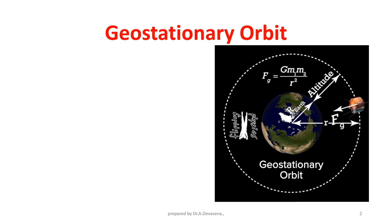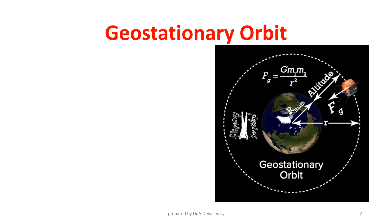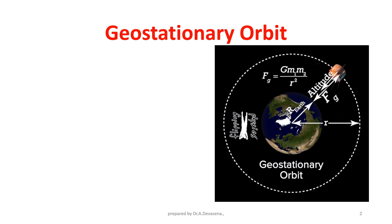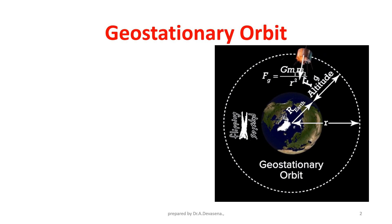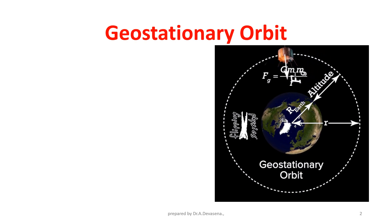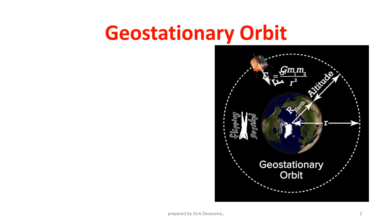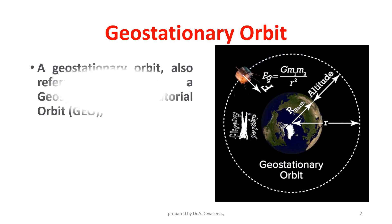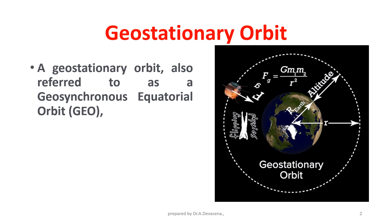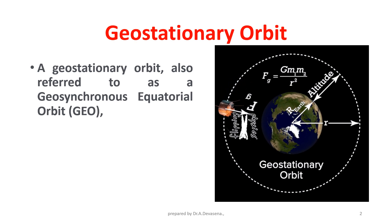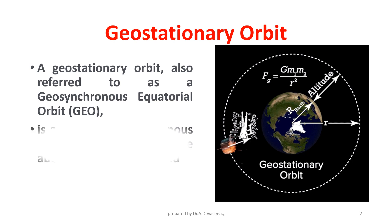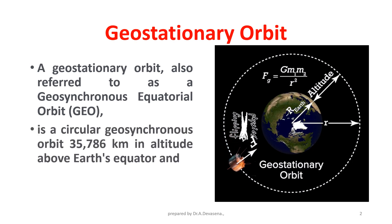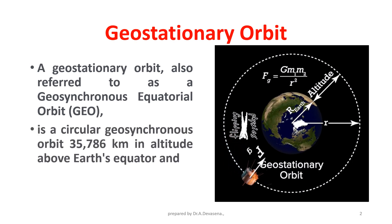Geostationary orbit. A geostationary orbit is also referred to as a geosynchronous equatorial orbit, that is GEO, is a circular geosynchronous orbit 35,786 km in altitude above Earth's equator and following the direction of Earth's rotation.